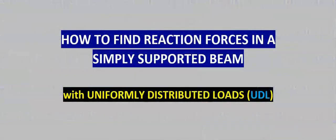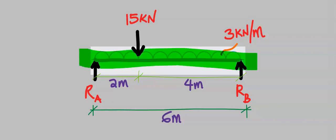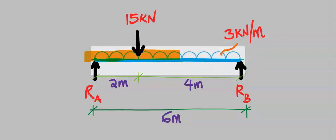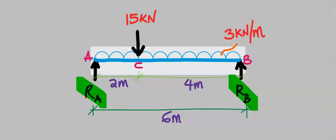In this video you will learn how to find reaction forces in a simply supported beam with uniformly distributed loads. In this question the beam has a length of 6 meters, a uniformly distributed load of 3 kilonewton per meter, and a 15 kilonewton point load acting two meters away from point A.